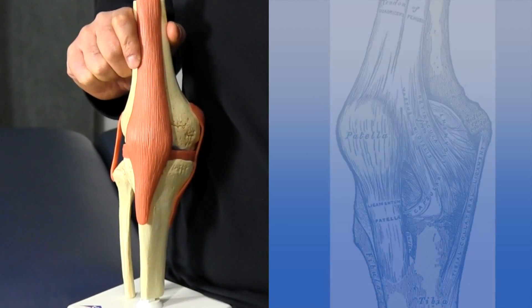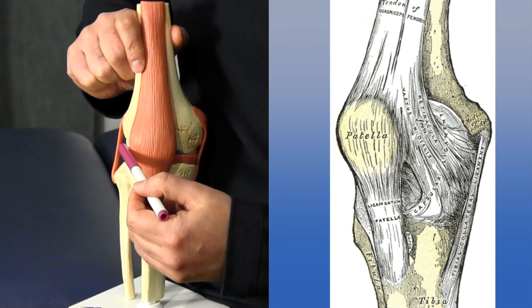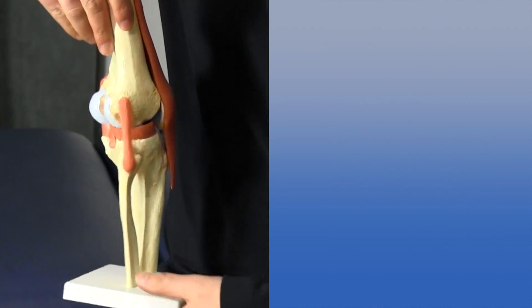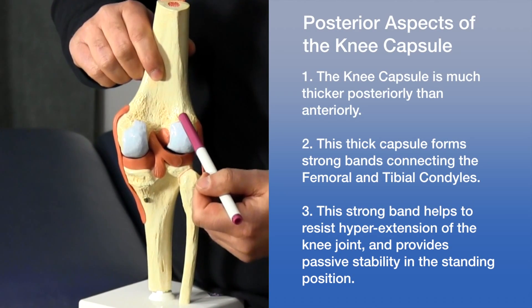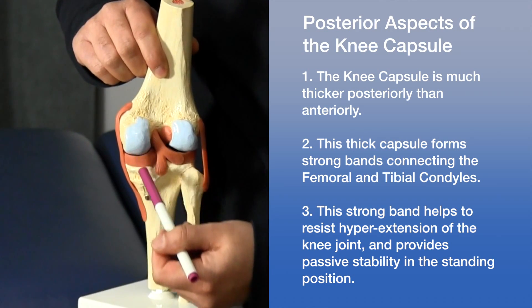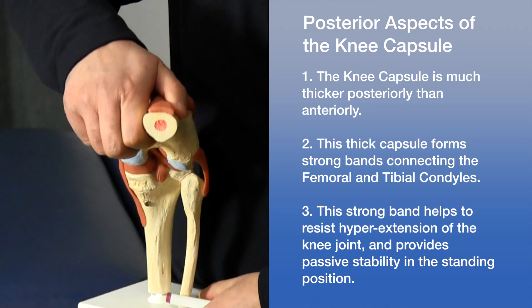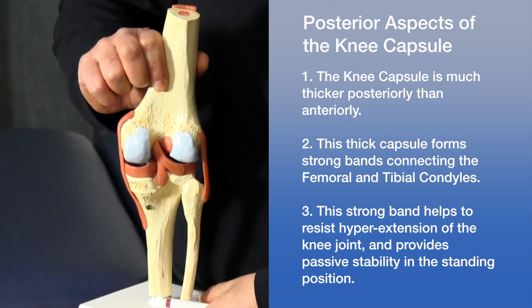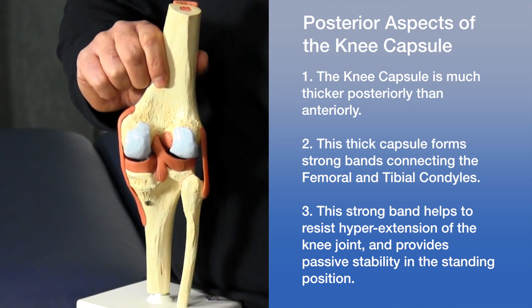The patella is attached to the femoral condyles and the menisci by small ligaments — thickenings of the capsule. The knee capsule is thicker posteriorly, and it forms strong bands that connect the femoral and tibial condyles. These bands resist hyperextension, providing passive stability in the standing position.